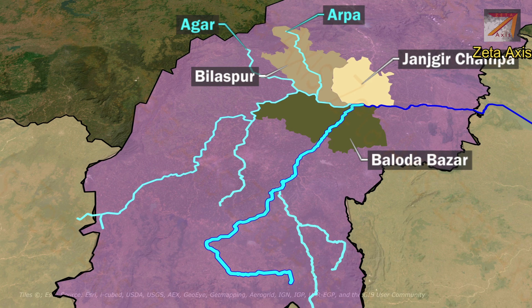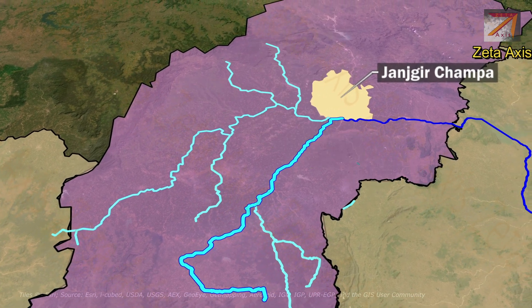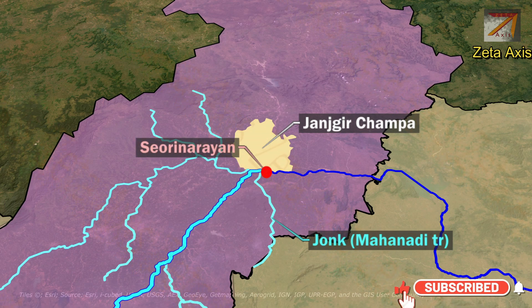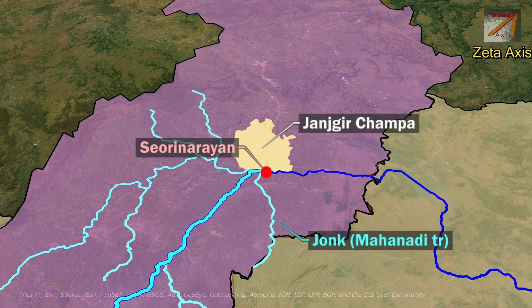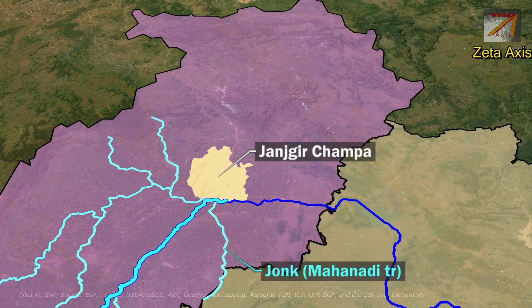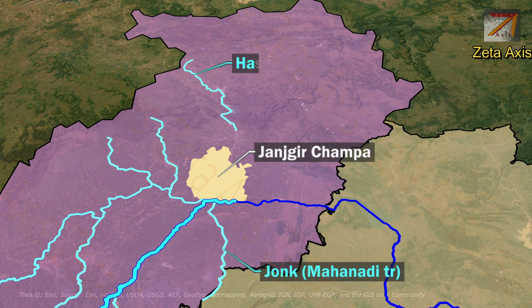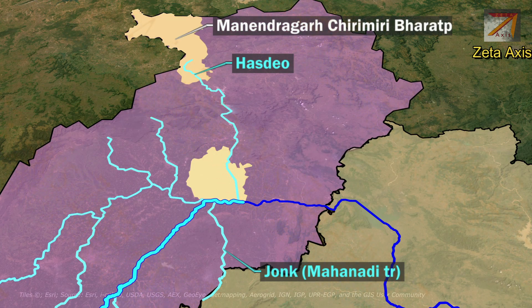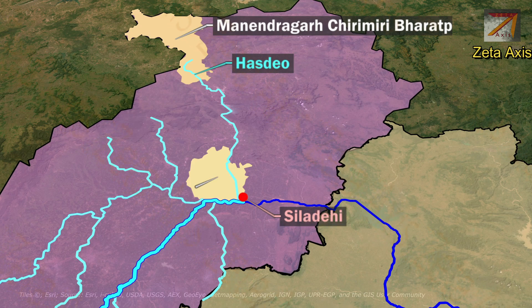Just after the confluence of Mahanadi and Sionath river, Jhonk river joins Mahanadi river at Sivri Narayan of Janjagir Champa district. The Jhonk river originates in Odisha and then flows into Chhattisgarh to meet Mahanadi river. Within Janjagir Champa district, another important river, Hasdiyo, also joins Mahanadi. The Hasdiyo river originates from Kaimur hills in Mahindrgarh, Chirimir Bharatpur district of Chhattisgarh, and flows south to meet Mahanadi river at Sila Dehi in Janjagir Champa district.